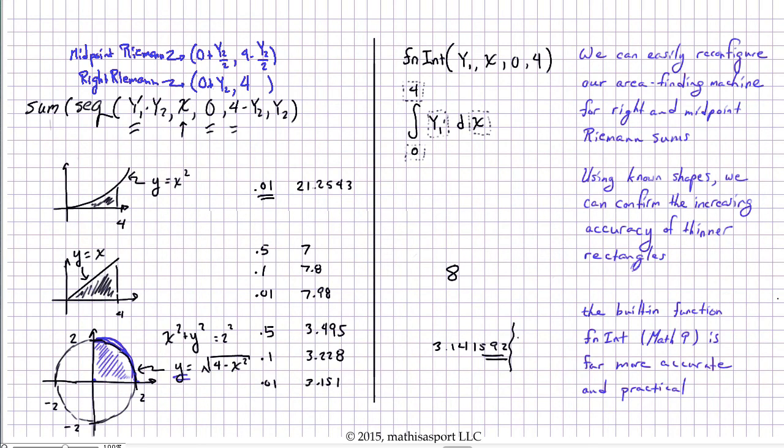It's very easy to reconfigure our area-finding machine for right and midpoint Riemann sums. And we decided to use known shapes to confirm that, in fact, our machine is giving us accurate results, results that seem to get better as we increase the number of rectangles and decrease the width of each rectangle.